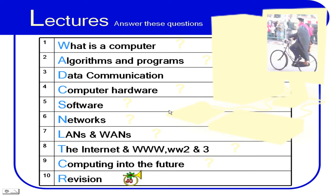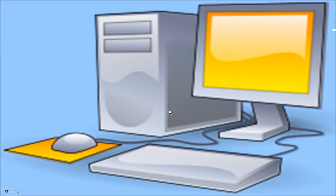Networks. LANs and WANs and VANs. The internet. World Wide Web. World Wide Web 2 and 3. Computing in the future. And then joy of joy. Revision. And passing the examination.